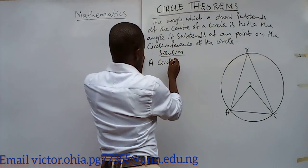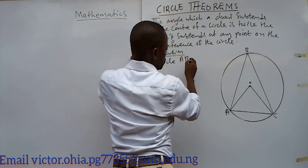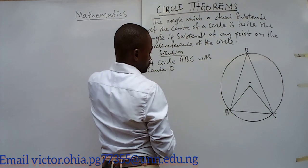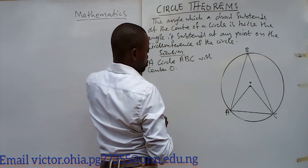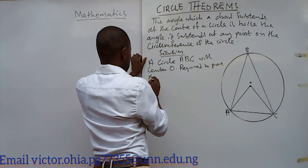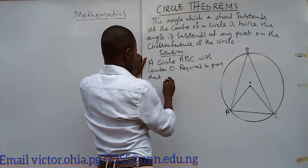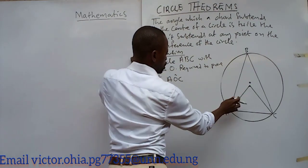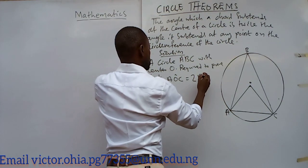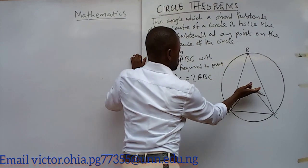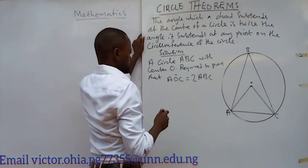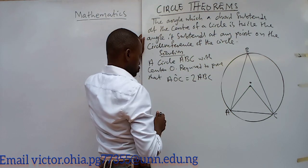I have a circle ABC with center O. Required to prove: angle AOC equals two times angle ABC. Angle AOC is the angle which the chord subtends at the center of the circle, and angle ABC is the angle which it subtends at any other point on the circumference of the circle. That is what we are trying to show.